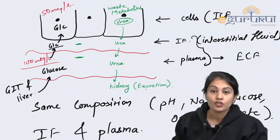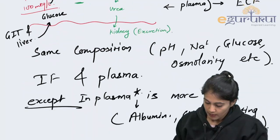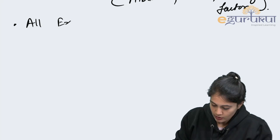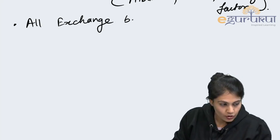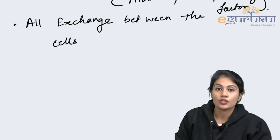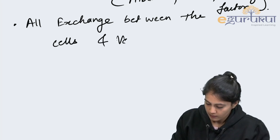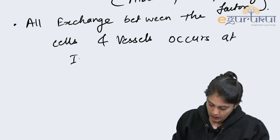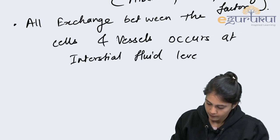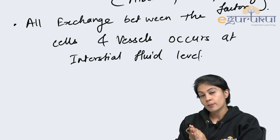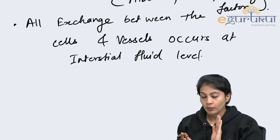Now we discuss about this exchange system. The benefit of that exchange is that all exchange between the cells and vessels occurs at the interstitial fluid level. Whatever substances are going towards the cell or from the cell towards the plasma, they must go through the interstitial fluid.